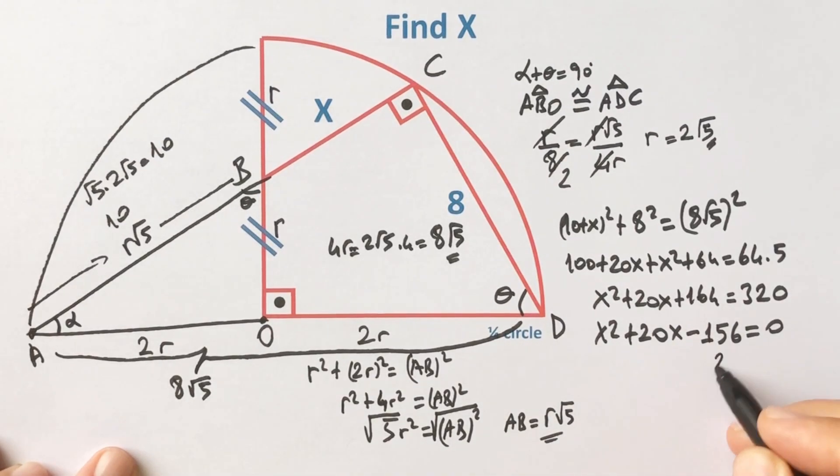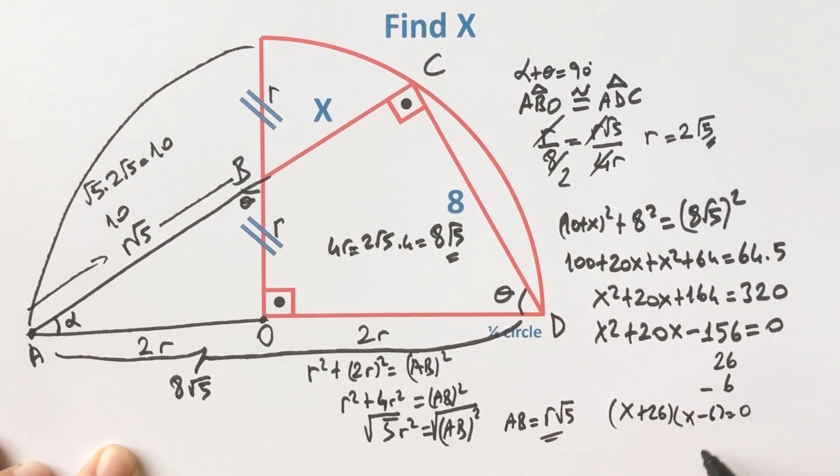Let's factor by separating 20 into 26 and -6: (x + 26)(x - 6) = 0. Since x can't be negative, x equals 6 units.